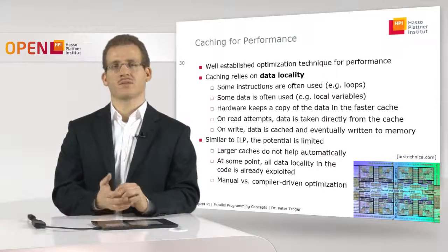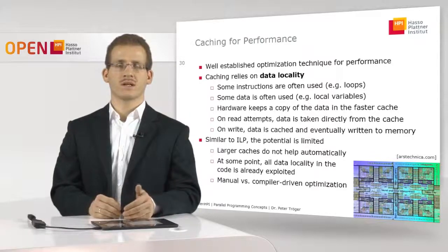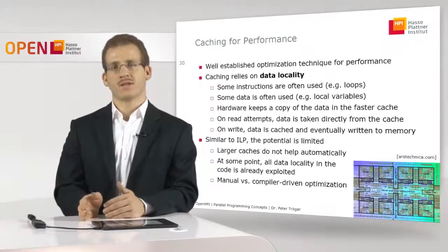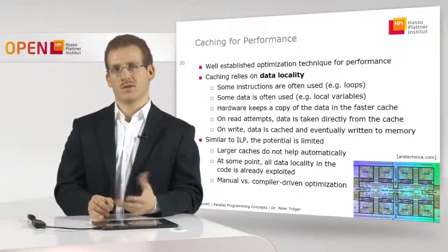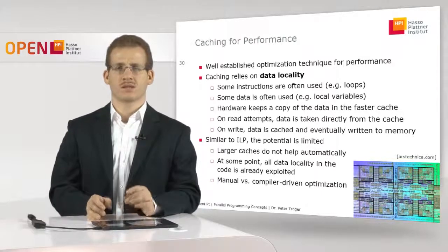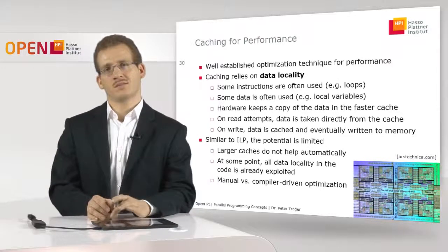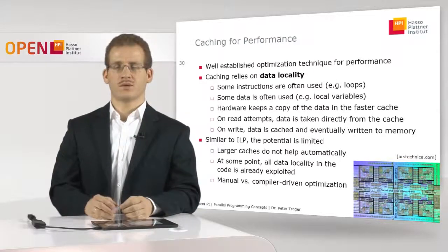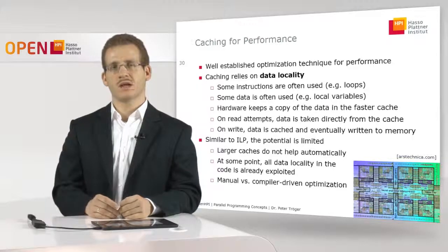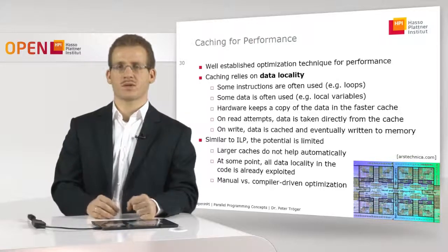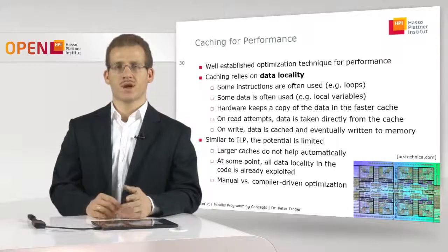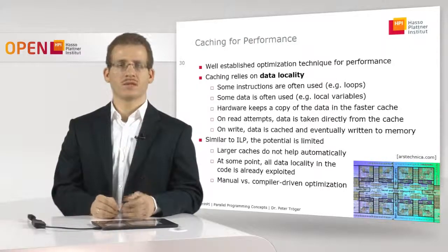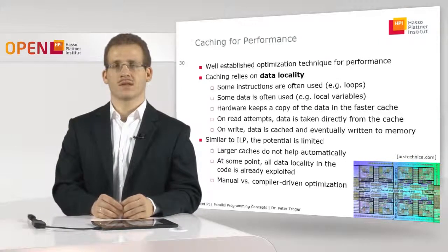The problem is that caching relies on a concept called data locality. Caching only works if you know which data is good to cache and which data you can't really cache because you have rare access to it. Instructions that are good to cache are, for example, things that happen inside a loop — the same set of instructions is executed in the loop body all the time. In order to avoid the processor fetching these instructions from main memory again and again, they can be kept in the cache. The same idea holds for data: if you do a computation on a piece of data small enough to fit into cache memory on the processor chip, you can speed up access to that data.